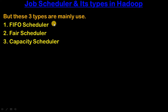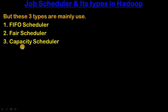Out of these, mainly three are most popular and mainly used. First is FIFO Scheduler, second is Fair Scheduler, and third is Capacity Scheduler. In the next session we will see details about these three schedulers — the differences between them and their advantages and disadvantages.